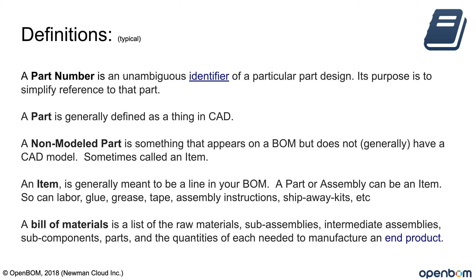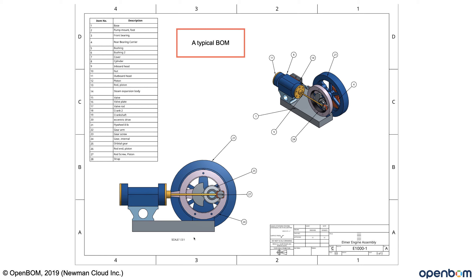We've got specifically 'part' and 'non-model part.' A part is generally defined as a thing in CAD, and a non-model part is a thing that's not in CAD — sometimes called an item. In this context, an item is going to be things like glue, tape, or velcro. In our example, we're going to be dealing with some Loctite. Let's refresh last week's webinar example of bills of material on a drawing.